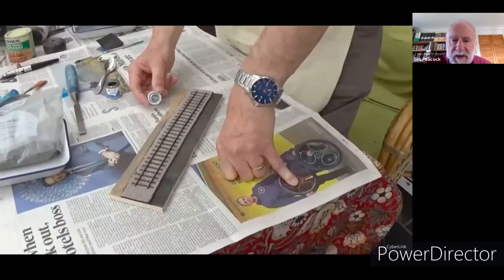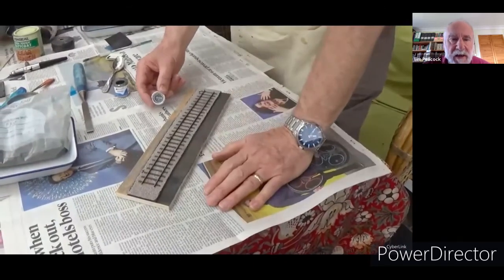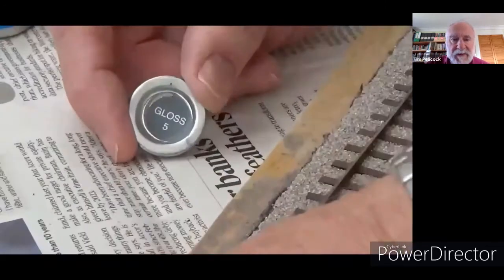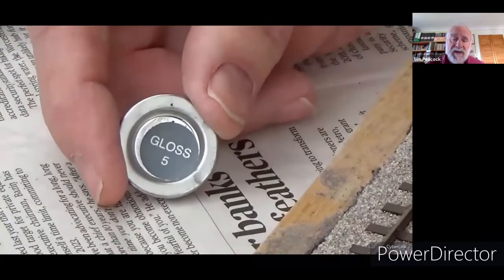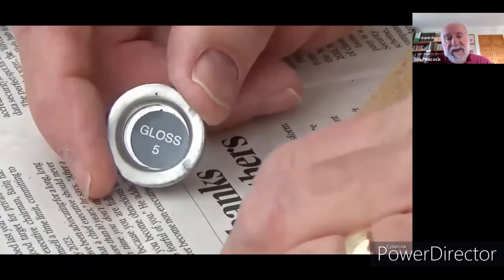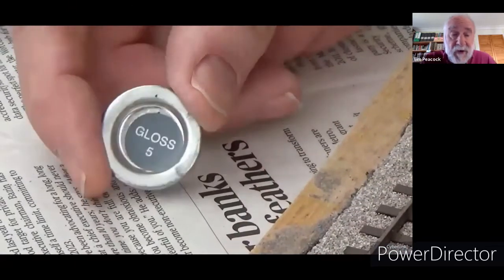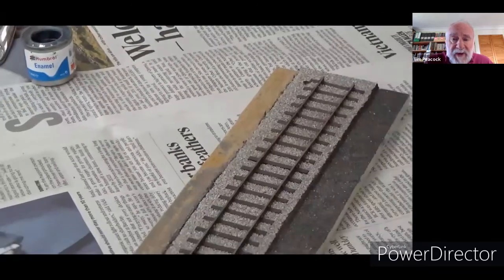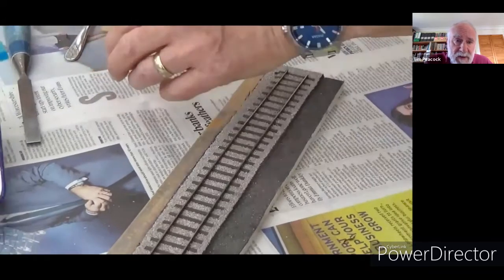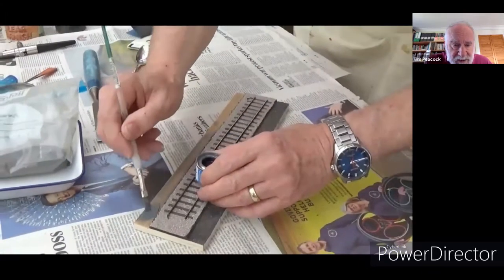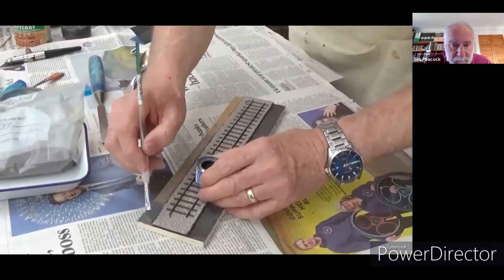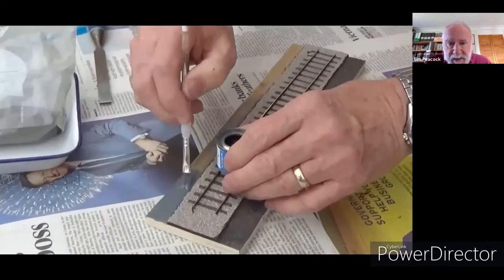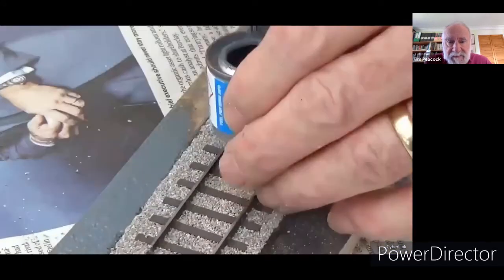So next, we're going to do the ash cess. And this is a technique that was first described, to my knowledge, by Gordon Gravitt. And we're using Humbrol No.5 Gloss Dark Admiralty Gray. That might seem counterintuitive to be using gloss. But the reason is, it stays sticky longer than matt would. And this is what's going to grab the ash. And once the ash is down, the gloss effect is entirely lost.